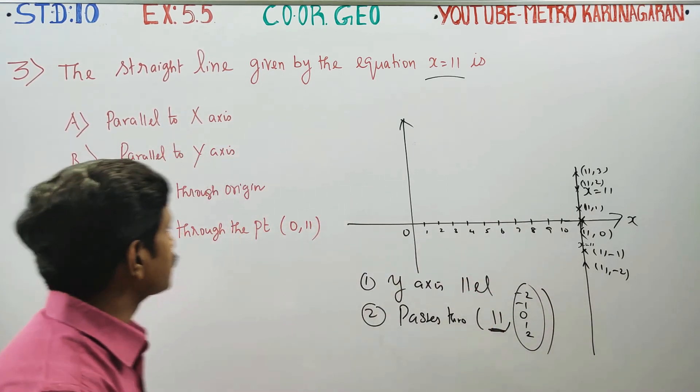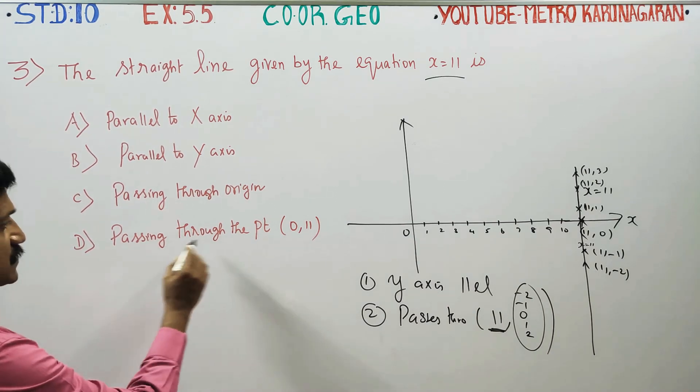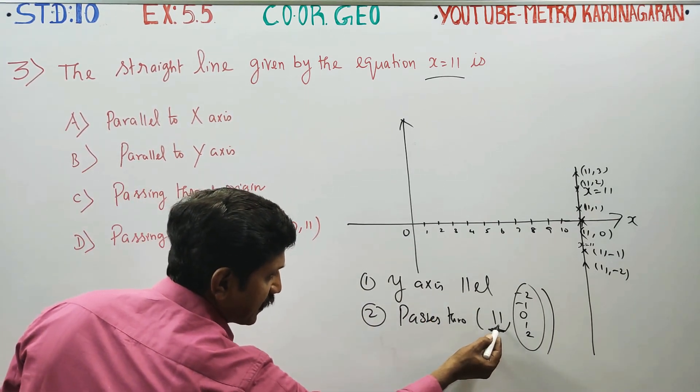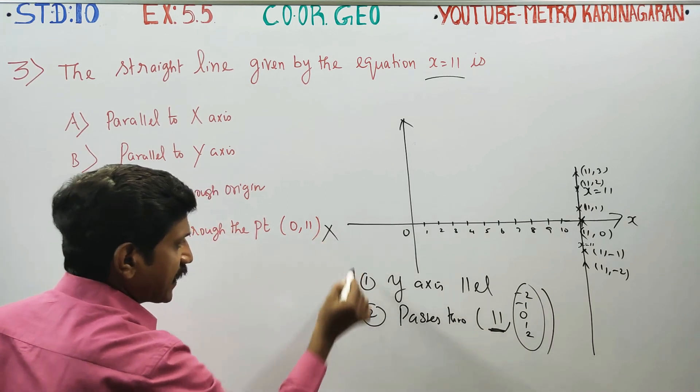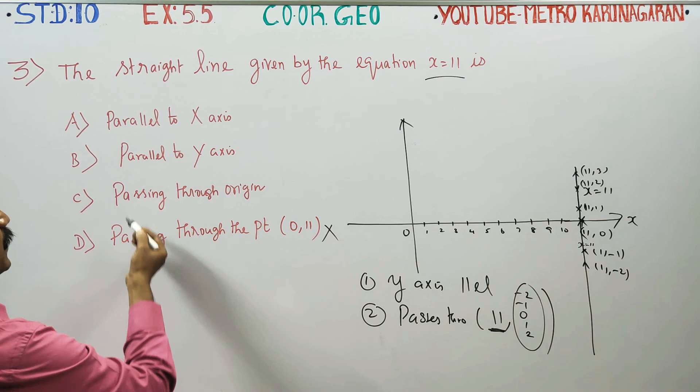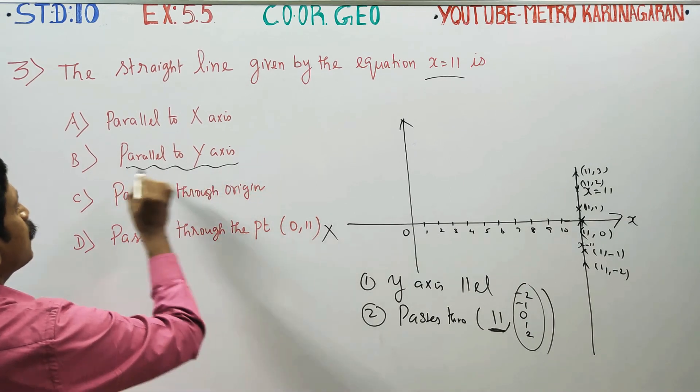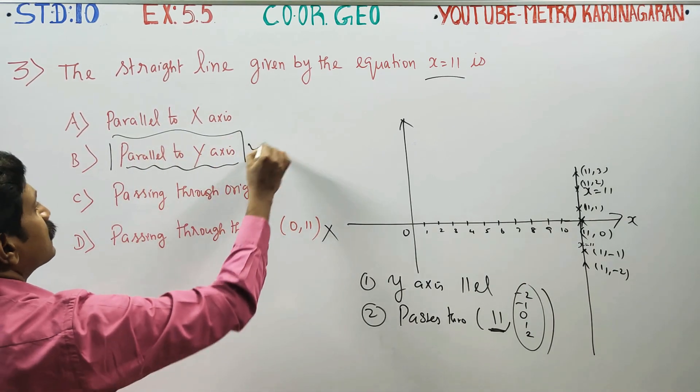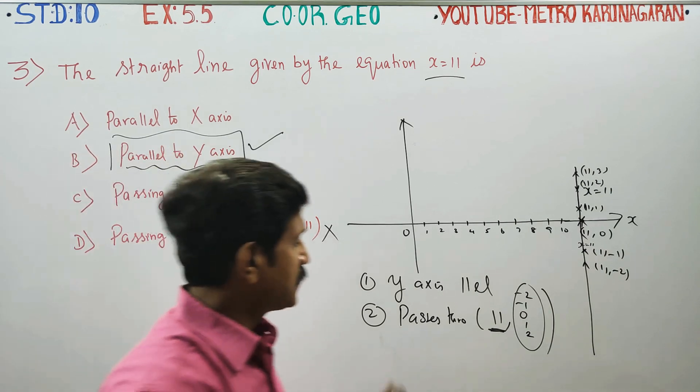Finally, the answer matters. Passes through 0,11, starting 11, parallel to y-axis. This is the best option. Option is B.